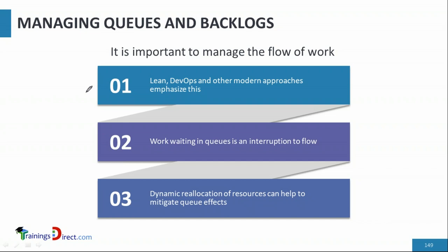Lean, DevOps, and other modern approaches emphasize the importance of managing queues and smoothening and automating the flow of work so there are no manual obstacles. Work waiting in queues is an interruption to flow — when a user asks for something and has to wait, that is an interruption. Dynamic reallocation of resources can help mitigate queue effects.